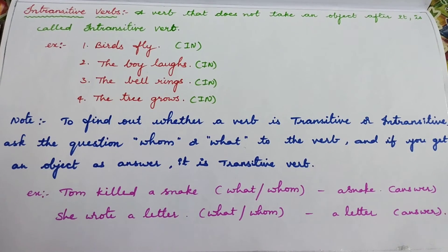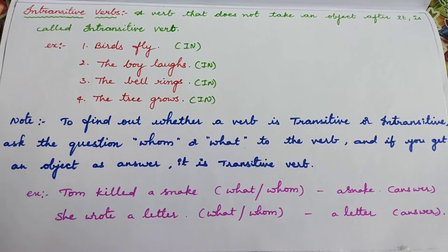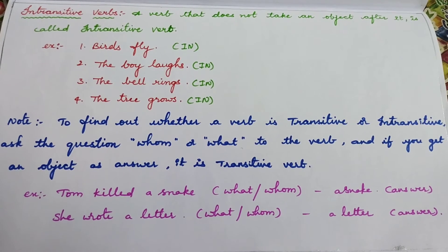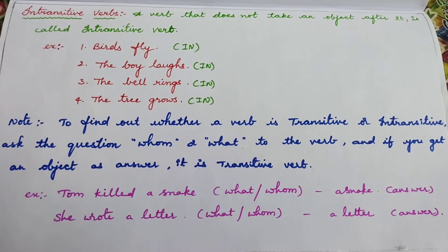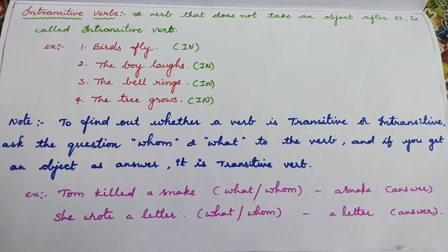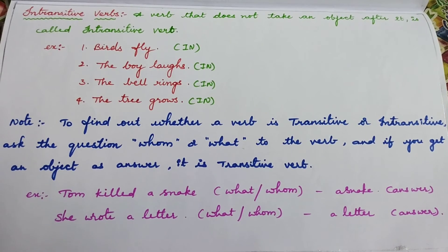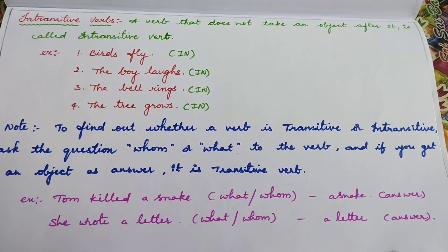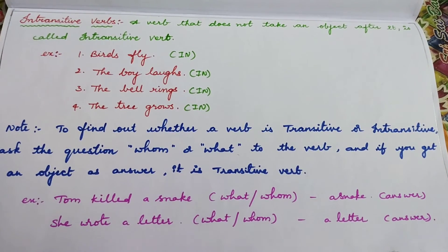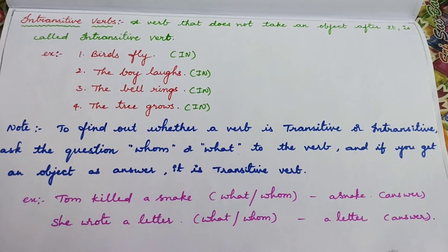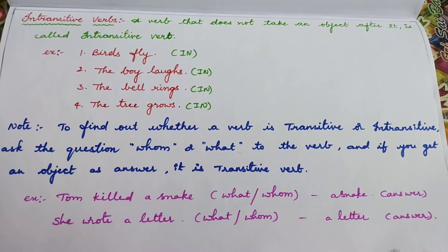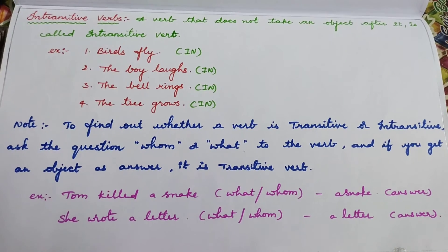Here is the note to give more clarity between transitive and intransitive. To find out whether a verb is transitive or intransitive. And if you can get an object as answer, it is transitive verb. For instance, if you want to find out whether a verb is transitive or intransitive, verbs are action words.